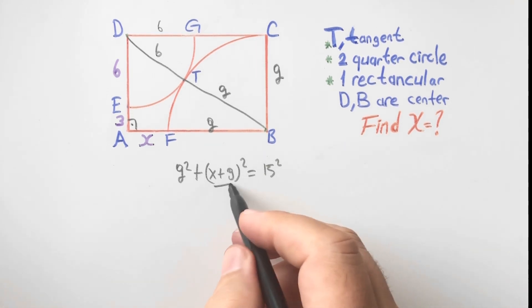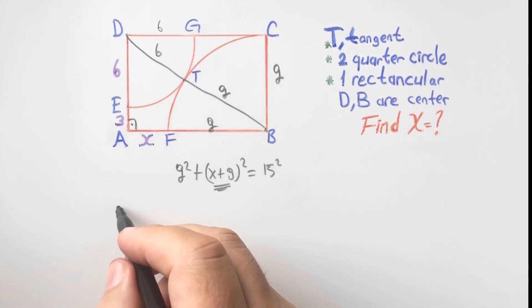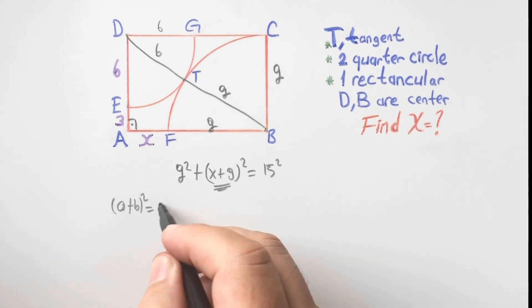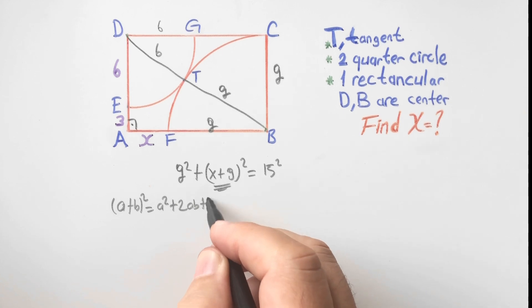How can we calculate this expression? Let's remind you, a plus b squared equals a squared plus two times ab plus b squared. This is important.